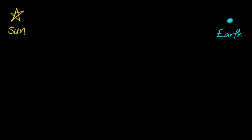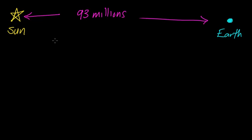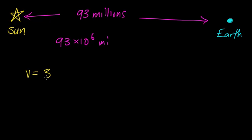In this video, what we're going to do is calculate the time it takes for light to travel from the surface of the sun to Earth. We know that the distance between the sun and the earth is 93 million miles, or 93 times 10 to the sixth miles. The average distance is also called one astronomical unit. Light travels from the surface of the sun at a constant velocity of 3 times 10 to the eighth meters per second — meaning it moves equal distances in equal times.